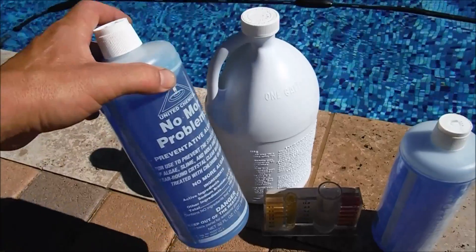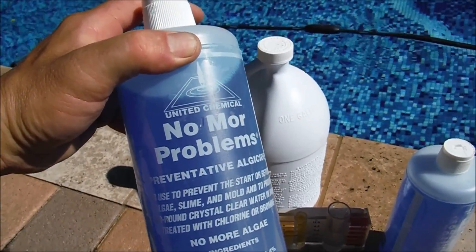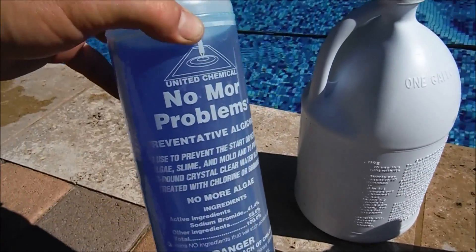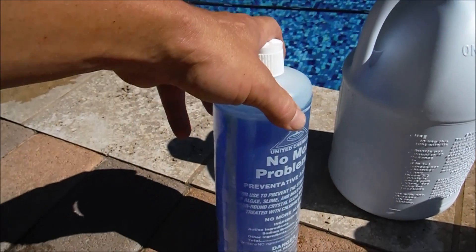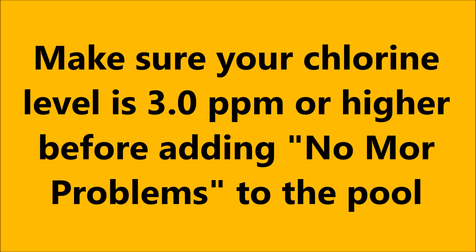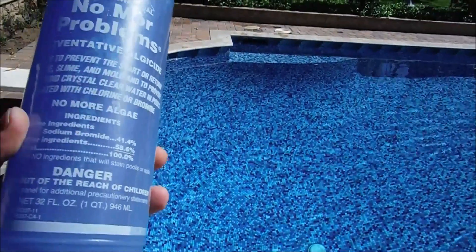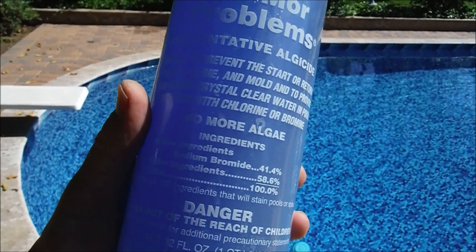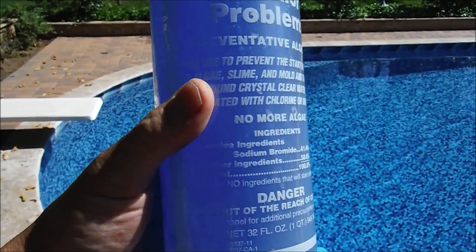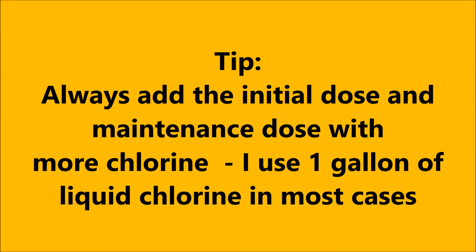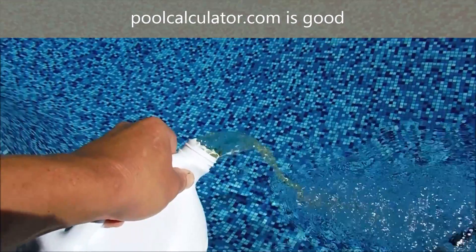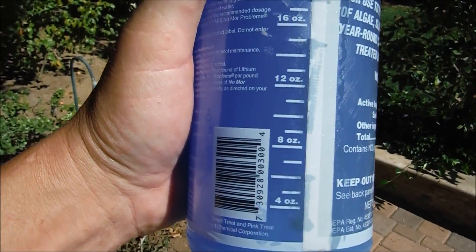If you struggle with an algae problem in your pool on a continuous basis, No More Problems by United Chemicals is a great product to add. This will prevent algae from returning. No More Problems is easy to use — you add an initial dose of 3 ounces per 5,000 gallons of water. It's a sodium bromide based formula that also has a clarifier and other ingredients that enhance the sodium bromide to help prevent algae growth and kill any algae that may form. There are also many tools online to calculate how much chlorine to add to bring your pool up to 3.0 or above.